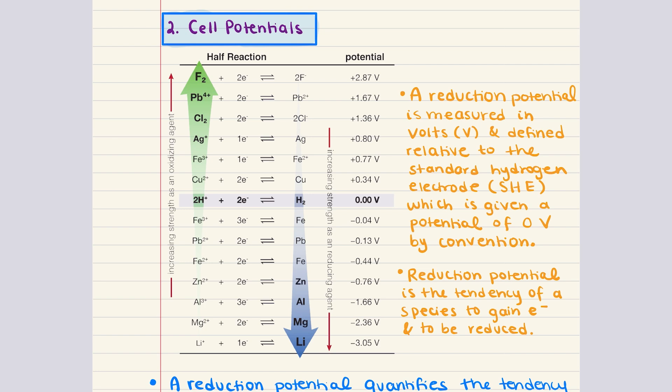We can also talk about standard reduction potential. This is measured under standard conditions: 298 Kelvin, one atmosphere pressure, and one molar concentrations for all of the reactants and products. These standard conditions allow us to compare the relative reactivities of different half cells and predict the direction of electron flow. A more positive standard reduction potential means a greater relative tendency for reduction to occur, while a less positive or more negative standard reduction potential indicates a greater tendency for oxidation to occur.